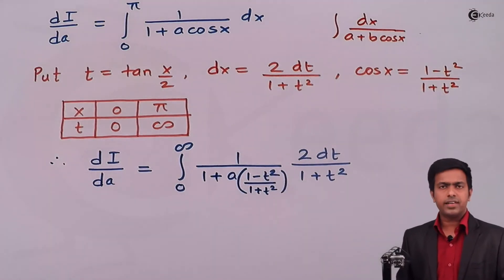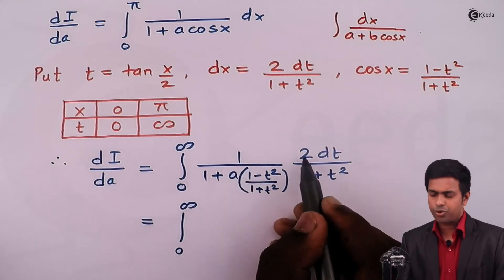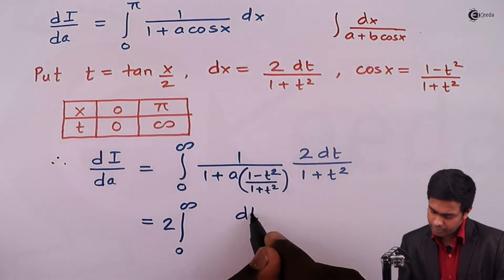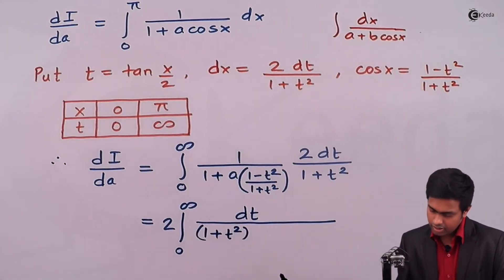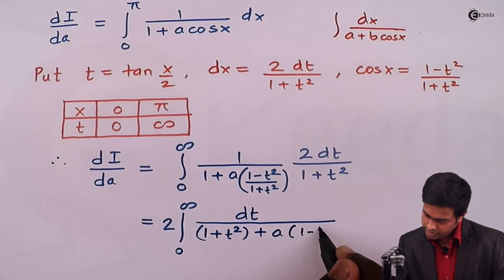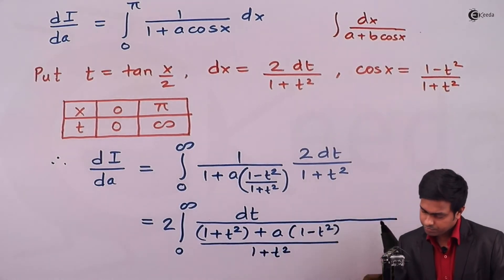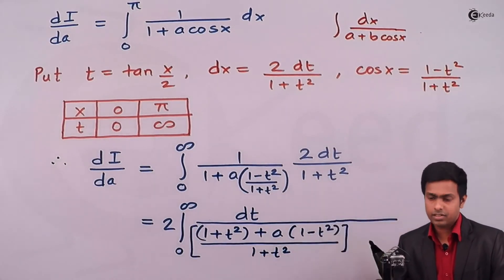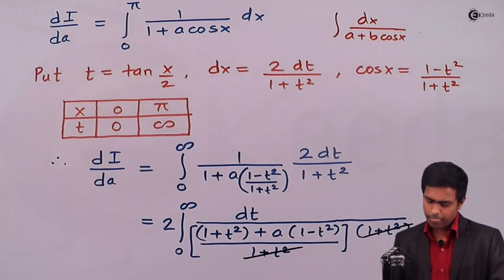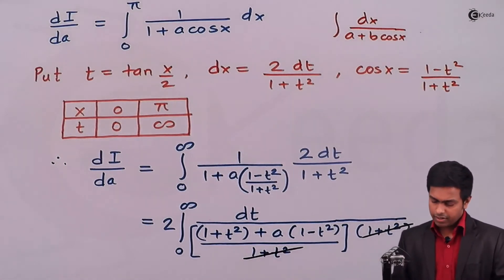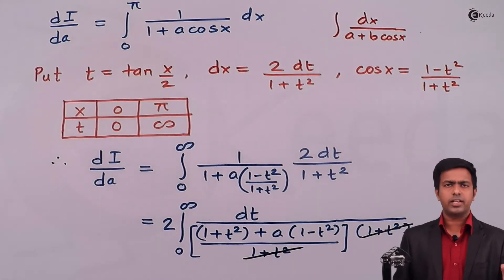Now let's evaluate this integral by taking the LCM of the denominator term. We get the integral from 0 to ∞ of 2dt in the numerator. In the denominator, we get 1·(1 + t²) plus a·(1 − t²), all over (1 + t²), multiplied by (1 + t²). We can cancel the (1 + t²) terms. Simplifying the denominator: the constant terms give (1 + a), and the t² terms give (1 − a)t².